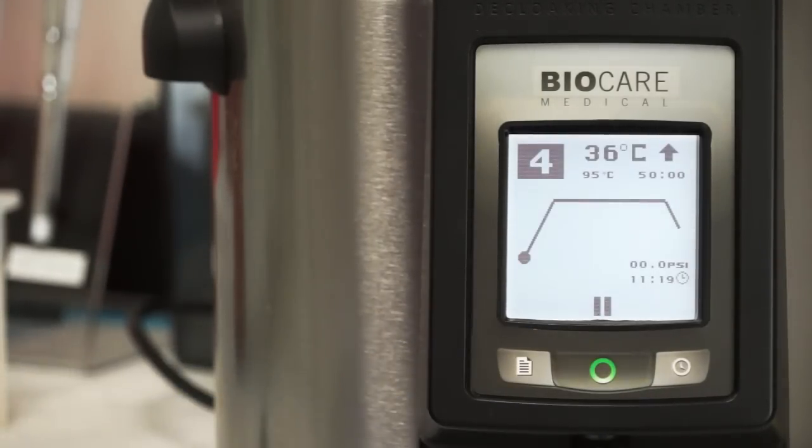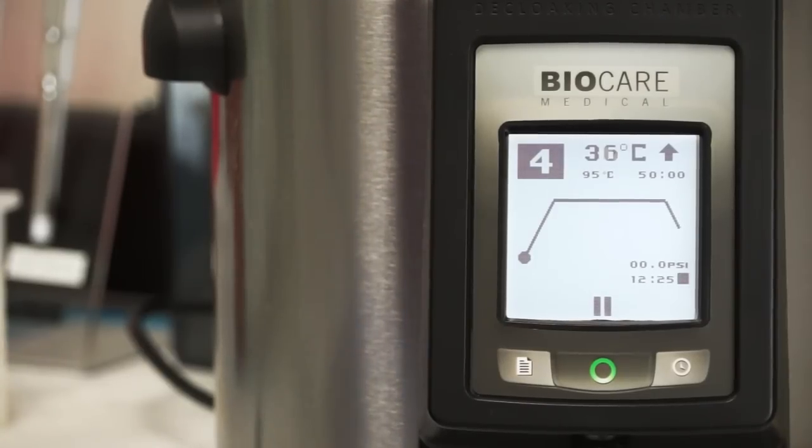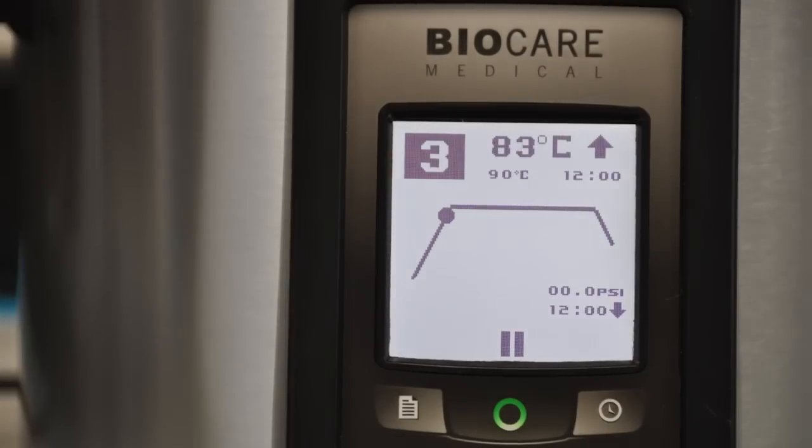While the run is in progress, the front screen of the decloaking chamber next-gen provides real-time information about the temperature of the pot as well as the time remaining in the run. It's illustrated here by time-lapse video.